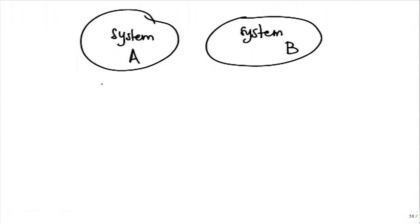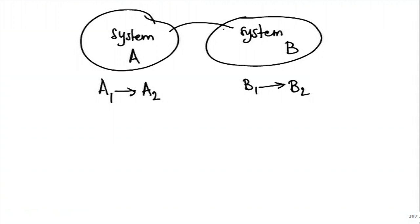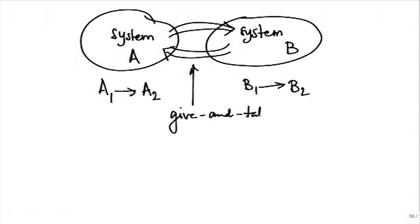We have understood what is meant by a process. Let us say that the two systems work together: system A executes a process from A1 to A2, system B executes a process from B1 to B2. This is a short form of saying system A is initially in thermodynamic state A1 and finally in thermodynamic state A2. And why do the systems change? They interact with each other. There is some sort of a give and take, and this give and take is known as interaction.